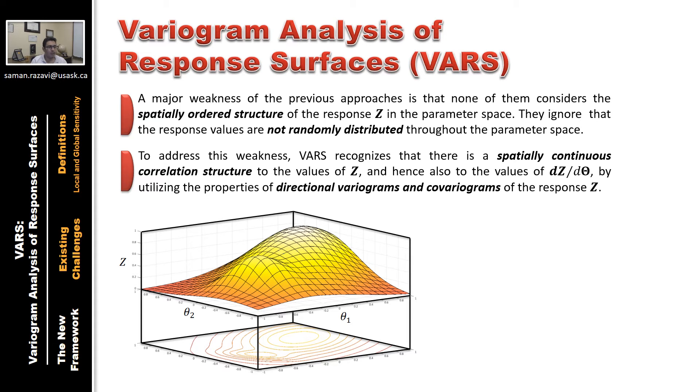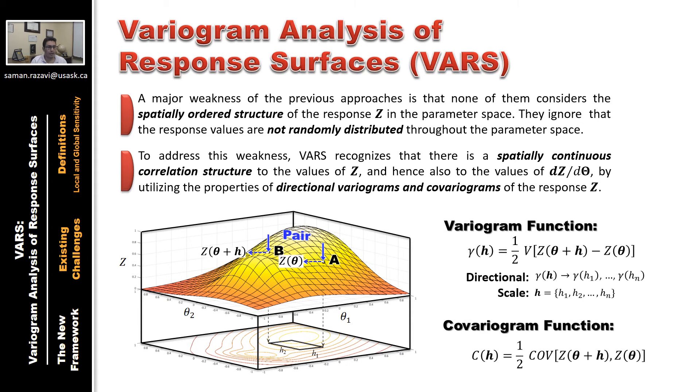Using pairs of points on the response surface, VARS constructs the variogram and covariogram functions. A variogram is a function quantifying the variance of change in response as a function of distance in the parameter space. h is a distance vector between two points. Covariogram function also quantifies the covariance structure in response as a function of vector h. For an n-dimensional model, we get an n-dimensional variogram and an n-dimensional covariogram function. VARS then extracts directional variograms and covariograms and uses it for global sensitivity analysis.